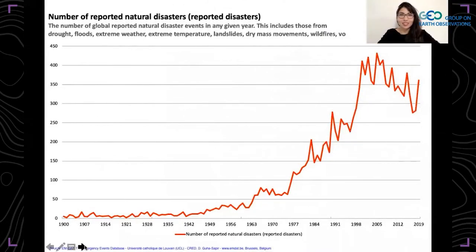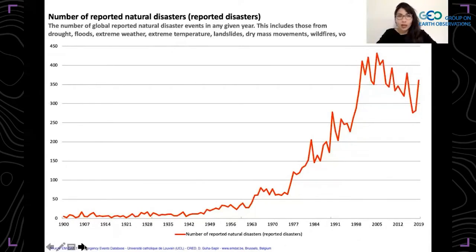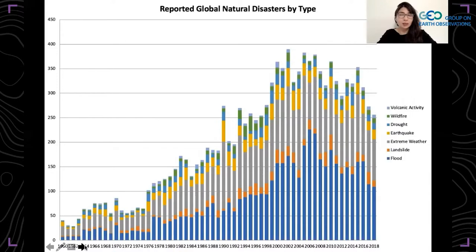According to this data from the emergency management database shown on screen, disasters are actually on the rise. This graph is tricky, because it does not tell you that reporting has also been improving since the 1980s — it's not like volcanoes started exploding more often or earthquakes started happening more frequently. But if we break down this information by category of disaster, we can conclude that at least two thirds of this increase is not due to reporting, but is real, and it's a result of so-called hydrometeorological disasters such as droughts, hurricanes, floods, and other extreme weather events.